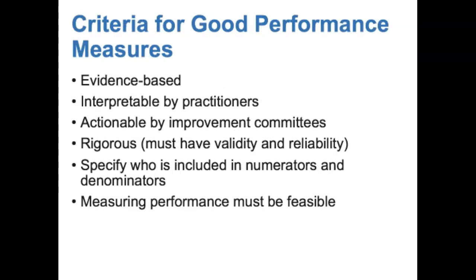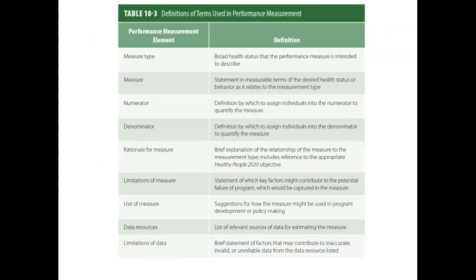There isn't a consensus on the definition of the term performance measures, but the general understanding is that they are indicators of process, output, or outcomes that have been developed for use as standardized indicators by health programs or organizations. There are some agreed-upon criteria for good performance measures: they must be evidence-based, easy for practitioners to interpret and actionable by improvement committees, valid and reliable, specifying who's in the numerator and denominator, and lastly they must be feasible. Table 10-3 shows the key elements generally used in performance measurement, and performance measures vary across accrediting bodies and performance measurement systems.